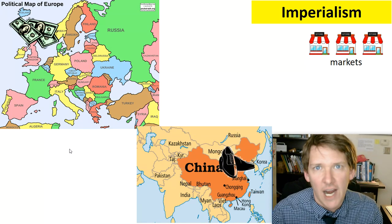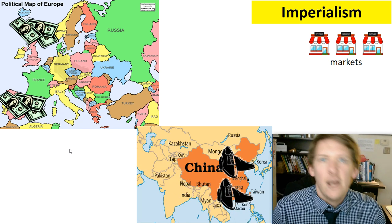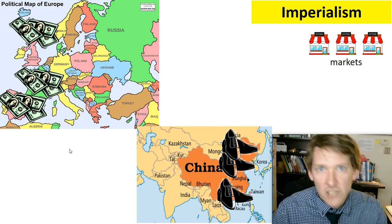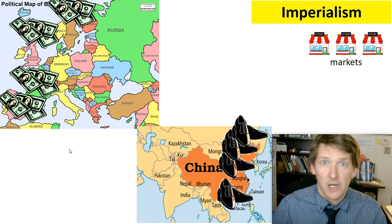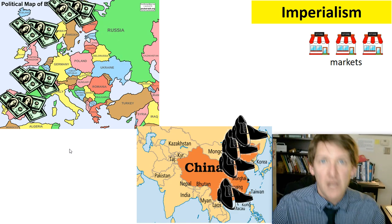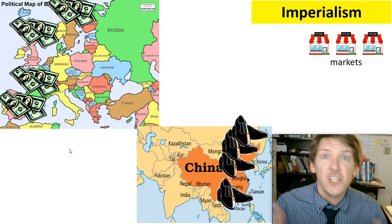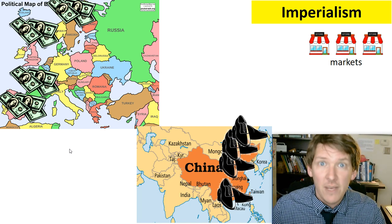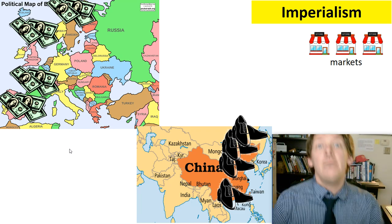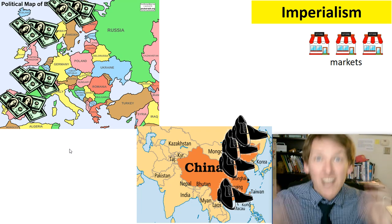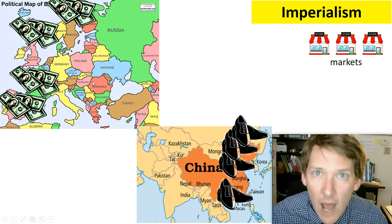England sells shoes to China — the money goes to England. Russia is making shoes for Russians and also for China, meaning twice as many shoes, twice as many factories, twice as many workers, twice as many people spending. That's great for Russia and all these countries are doing really well.